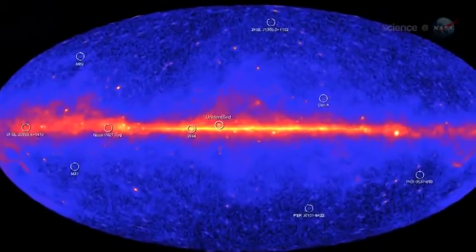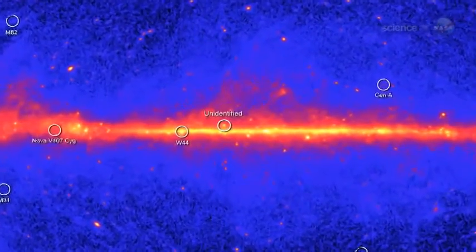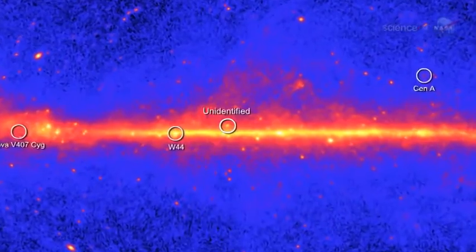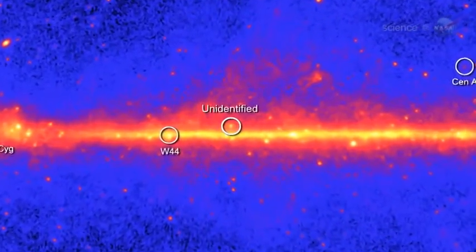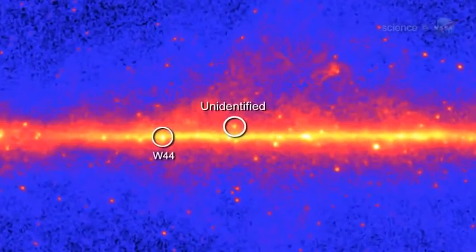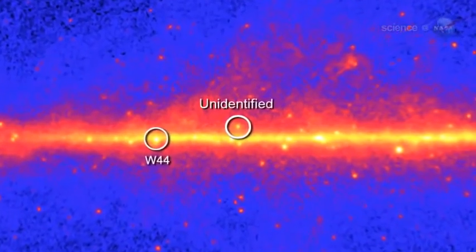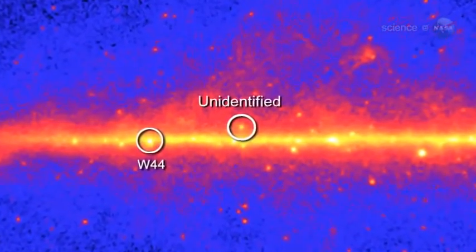The Fermi team recently released the second catalog of gamma-ray sources detected by their satellite's Large Area Telescope. Of the 1,873 sources found, nearly one-third are complete mysteries. No one knows what they are.